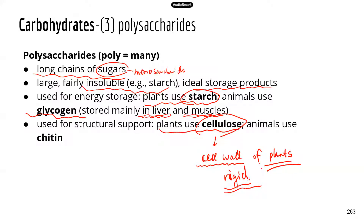Animals also use polysaccharides for structural support, and that polysaccharide is chitin. If you've ever eaten crawfish or lobsters, those shells contain chitin — a polysaccharide that is part of the larger complex making up the shell, forming a very hard, tough structure that provides structural support.